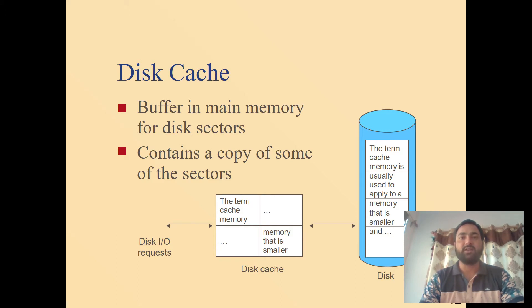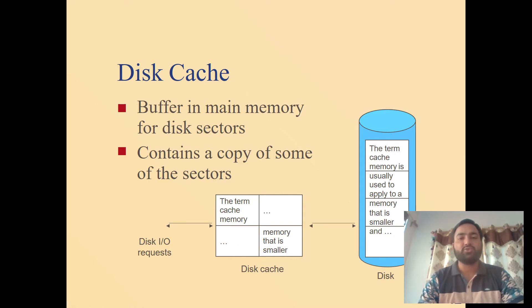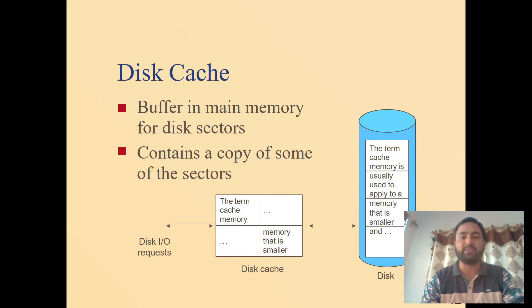The cache is used to enhance the speed of I/O operations and improve system performance. As shown in the diagram, there is a disk and there are I/O requests made by the system. The disk cache sits in between the system and the disk, acting as an intermediate buffer. Since the cache is in main memory, transmission of frequently requested sectors is fast.